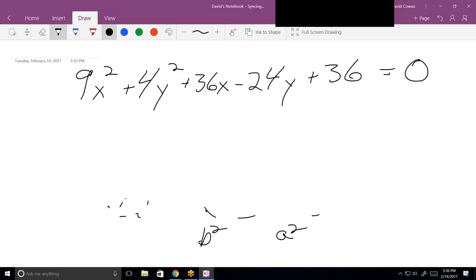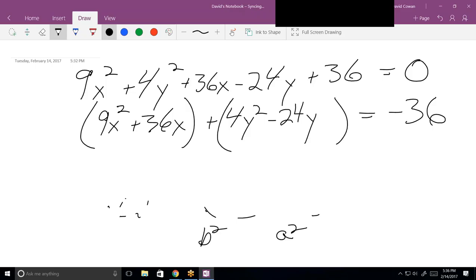All right, so how are we going to rearrange this to get started? Well, I'll put the constant on the other side, and then you'll see the X and Y terms next to each other. All right. So we're going to have 9X squared plus 36X plus 4Y squared minus 24Y equals minus 36. Right? Yeah.